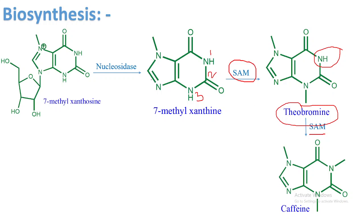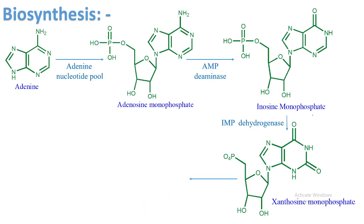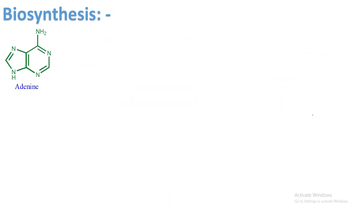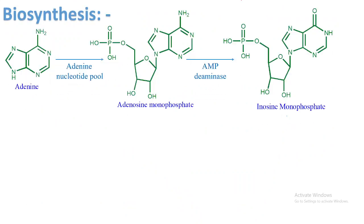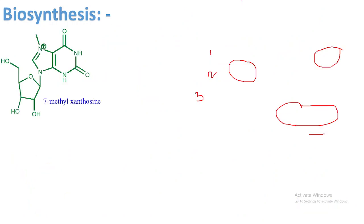So this was all about the biosynthesis of caffeine. I showed the biosynthesis pathway from adenine — through the adenine nucleotide pool, AMP, IMP, XMP, xanthosine, 7-methylxanthosine, 7-methylxanthine, theobromine, and finally caffeine. The biosynthesis can also start from guanine or from de novo inosine monophosphate. If you have any questions regarding this biosynthesis or any other questions regarding caffeine, please comment below. Thank you for watching — see you in the next video.